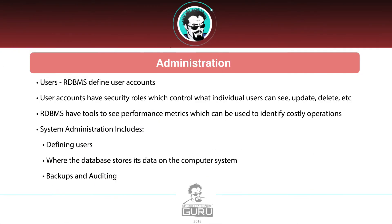Finally, we have administration. The system manages user accounts with security roles that control what each user can see. Typically your system has a very powerful account that can do everything, but you might want to give a user like Fred in accounting the ability to see a payroll table but not the HR table. You can create a role for Fred where he can see one table but not the other. The RDBMS enforces those security roles — who can see what, who can update what, who can delete what.